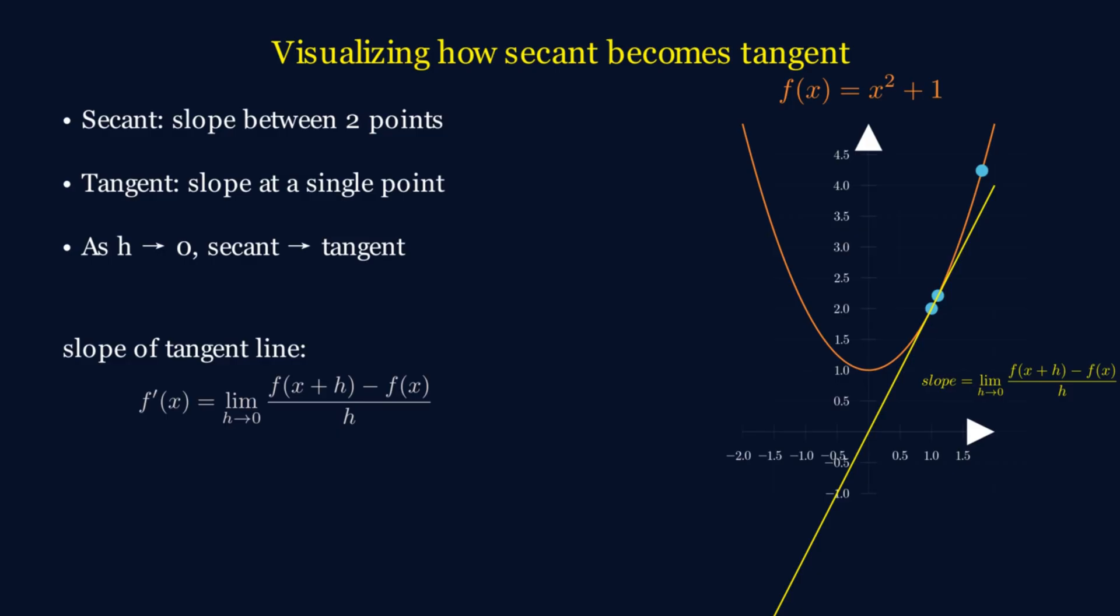And here's the cool part. Derivative, slope of the tangent line, instantaneous rate of change, these all mean the same thing. Just like secant line, slope of the secant line, and average rate of change are also interchangeable.